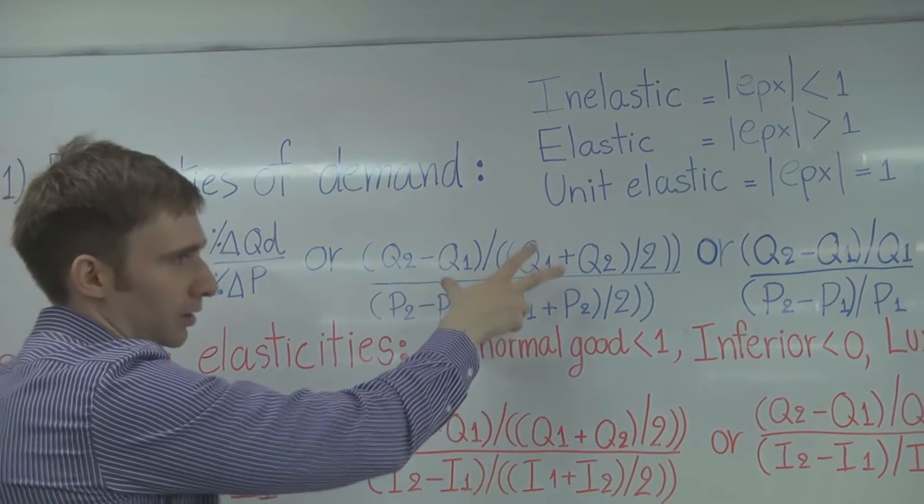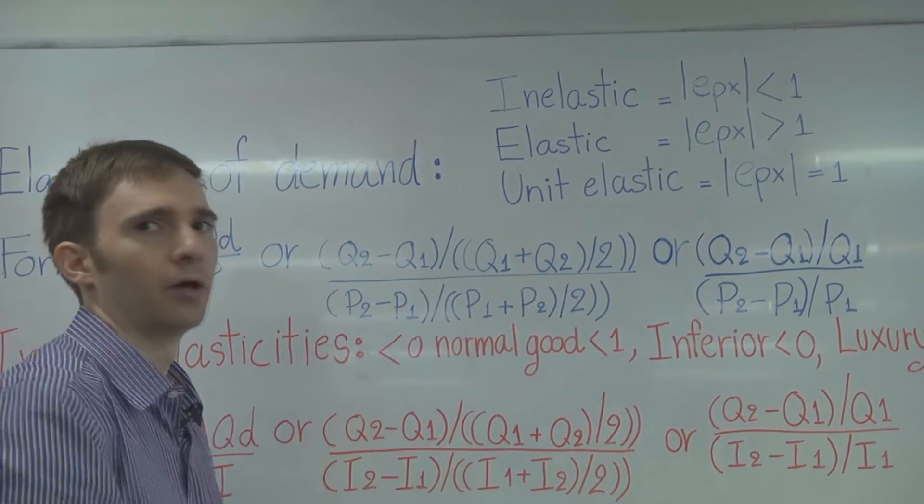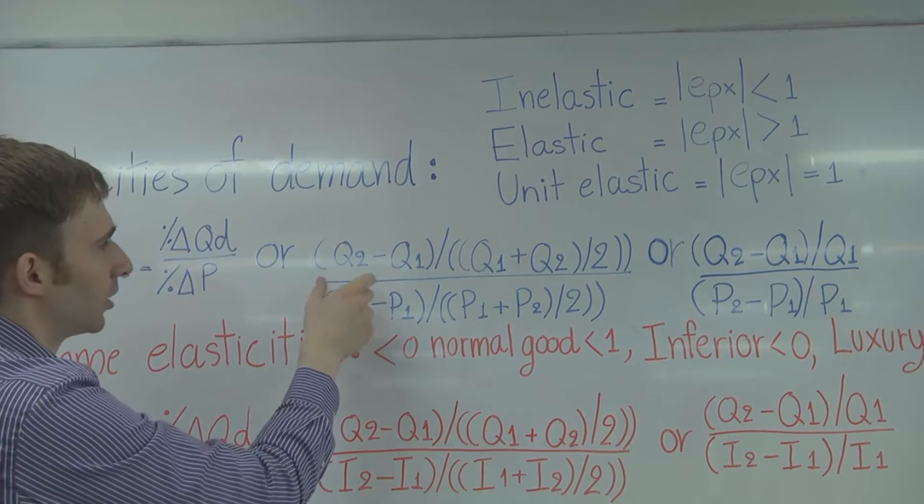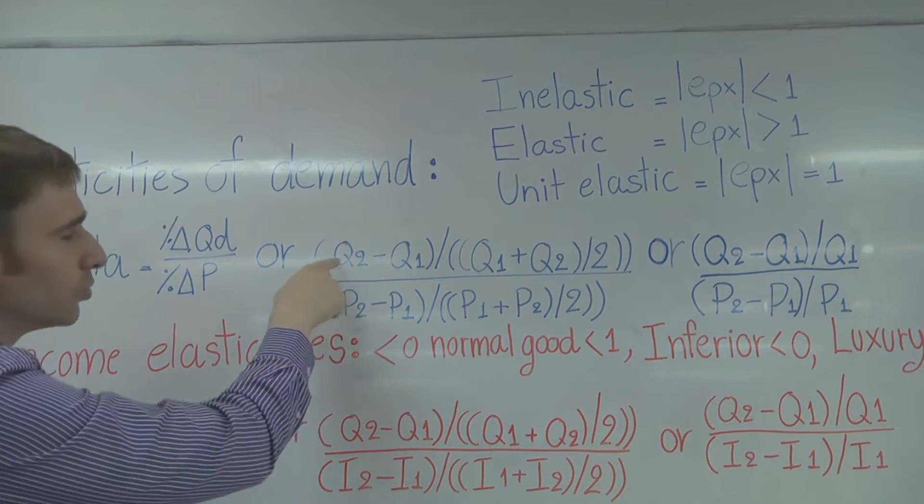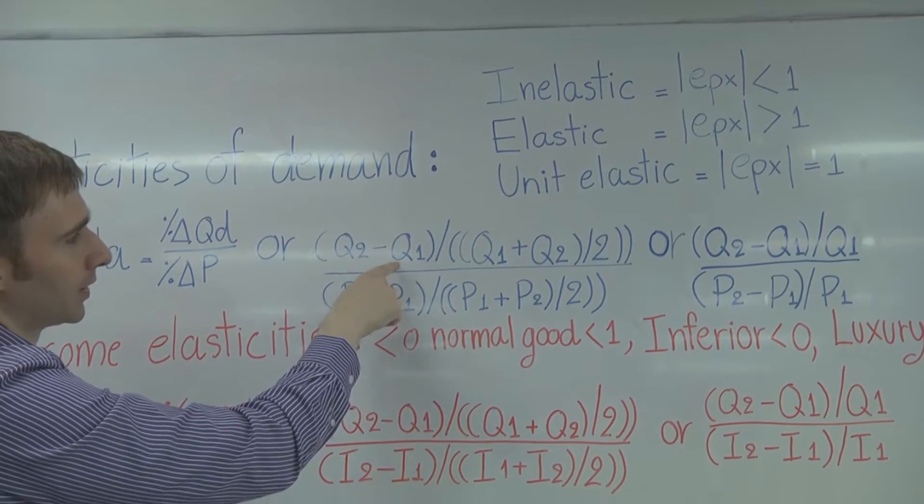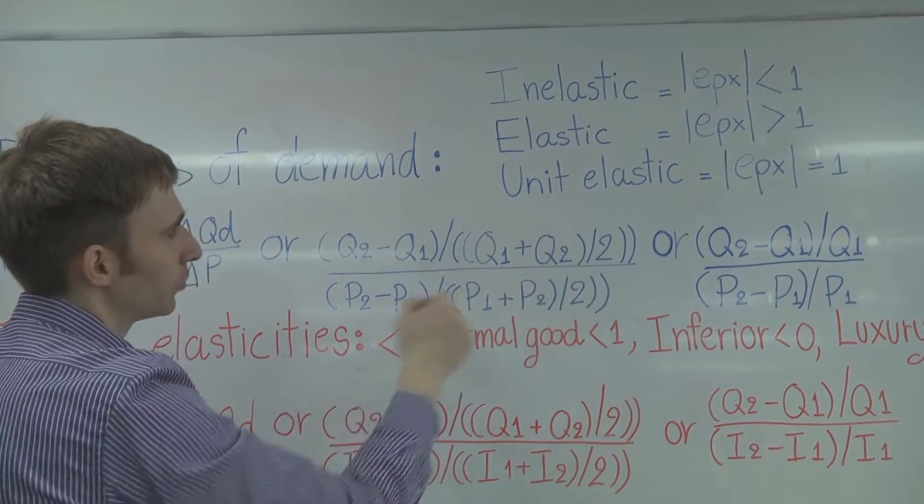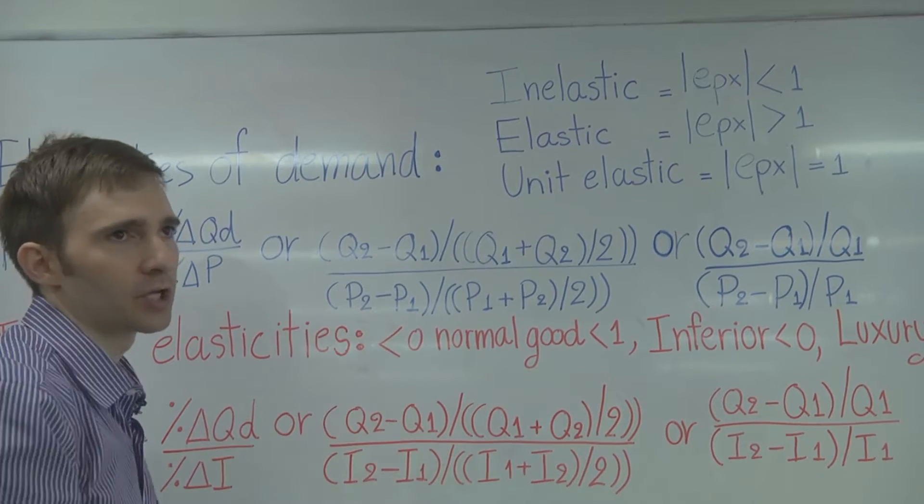The first one is the more advanced, the better formula. It's going to take the quantity, the new quantity minus the old quantity, divided by the average of the new and the old, and that'll be your percent change of quantity.